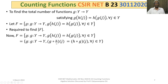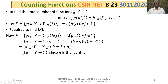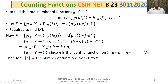This means g ∘ h and h ∘ g are precisely the same functions. But since h is the identity function, g ∘ h = h ∘ g = g for all g. So we simply need to count all functions from Y to Y. The order of F equals the number of functions from Y to Y, which is |Y| to the power |Y|, that is 100 to the power 100.